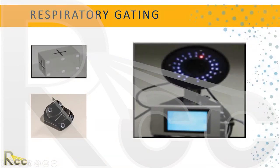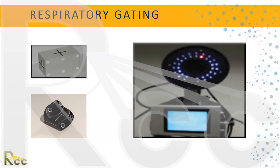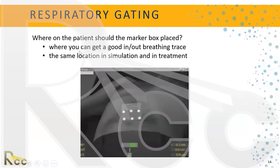There are different types of marker boxes. The smaller one is probably used more for breast treatments. The main box must have some anatomy to sit on. The larger one is more for larger treatment areas. The smaller one is more advantageous for smaller treatment areas.